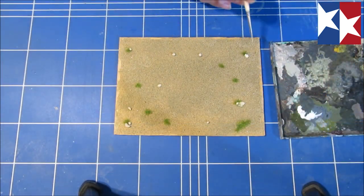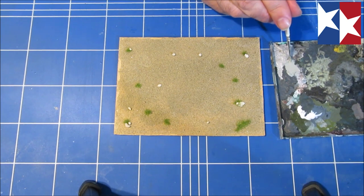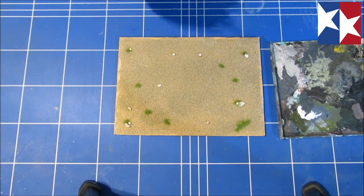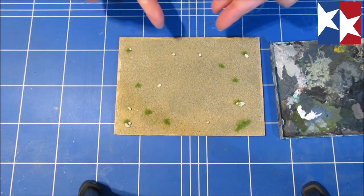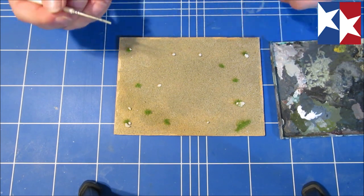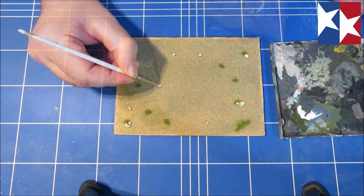Okay so these rocks here are a little bit on the bright side. So I'm going to tone them down with some thin paint. And because it's cat litter it will absorb the paint a bit.